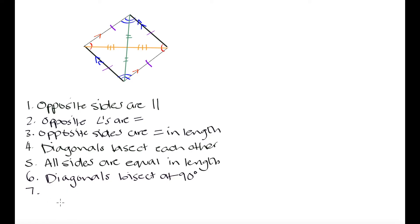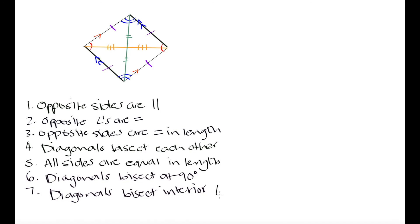The third special property of the rhombus is that the diagonals bisect the interior angles. Each interior angle is split into two equal sub-angles by the diagonals. For example, the large blue angle at one vertex is divided into two equal parts by the green diagonal, and the same applies to every other interior angle.